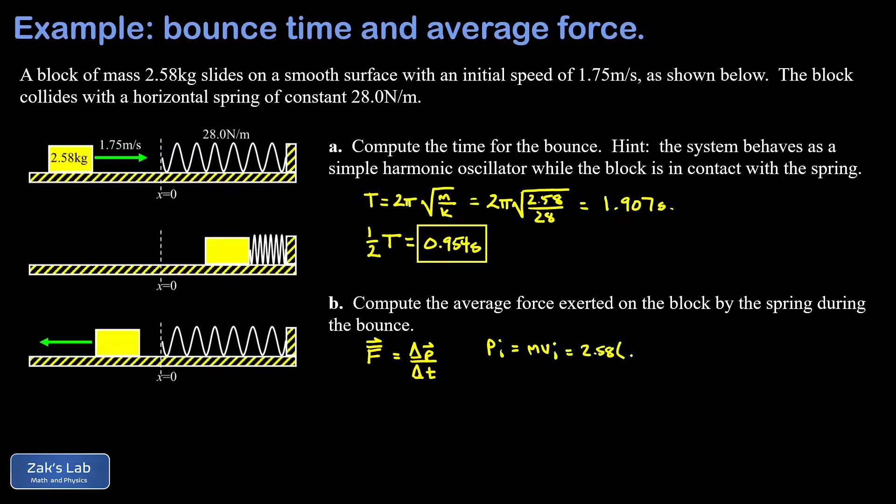p_initial is just mv_initial. We plug in the mass 2.58 kilograms and the initial velocity positive 1.75 meters per second because we're keeping track of direction with plus and minus signs. When we run the numbers we get 4.515 kilogram meters per second.